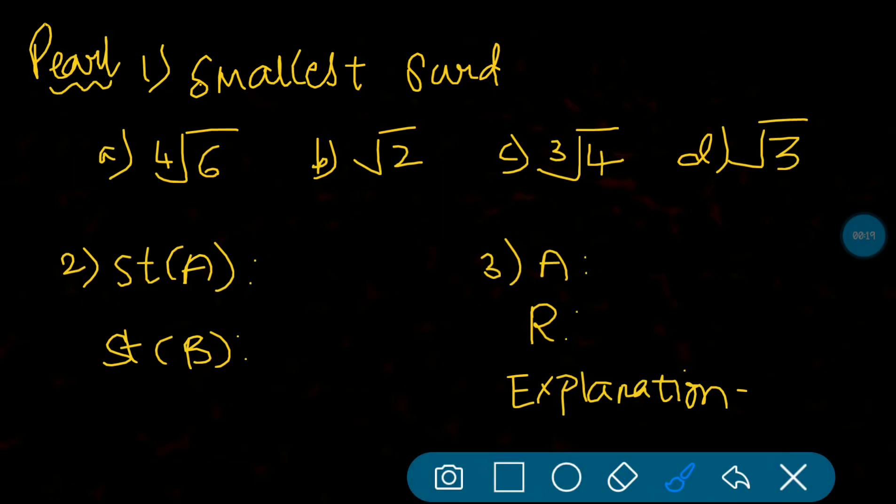Pearl package first question: Among the following, which is the smallest surd? The answer is root 2 because when the order is less we can see it is the smallest surd. Root 2 is the smallest because according to values, root 2 is smaller than root 3.